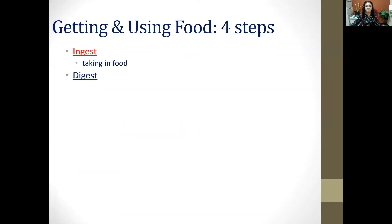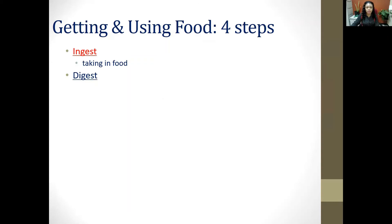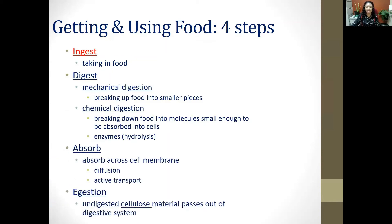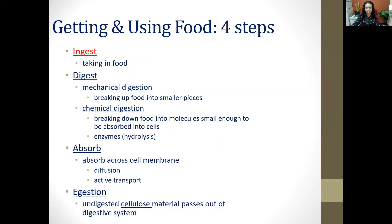Once we get food, it moves through four steps. First, you ingest the food by taking it into your mouth. Then you digest it mechanically and chemically. Next, you absorb the nutrients. Finally, you egest the undigested food — removing waste from the body.